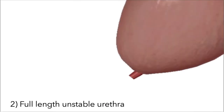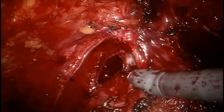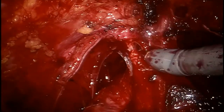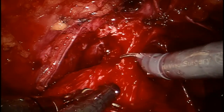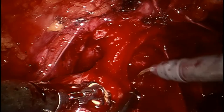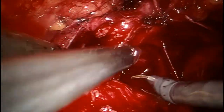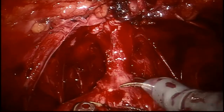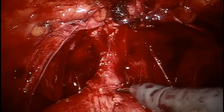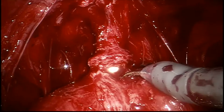In this case, again, we did not preserve the periurethral supporting structures. However, the tumor was not compromising the apex, so we aimed for full urethral preservation. We can see a nicely dissected and long urethra. However, notice that it is an unstable, or floppy, urethra, as it is not supported by periurethral structures.